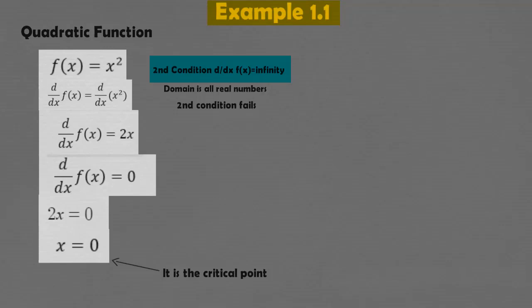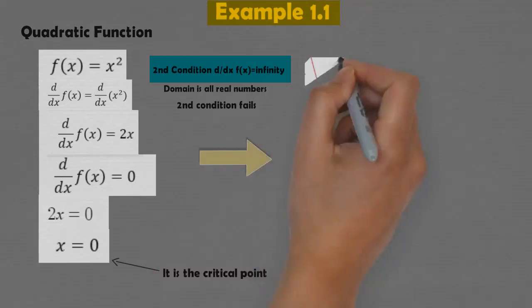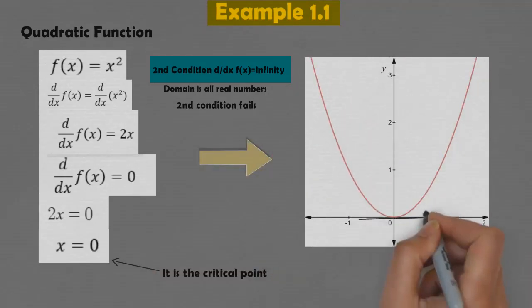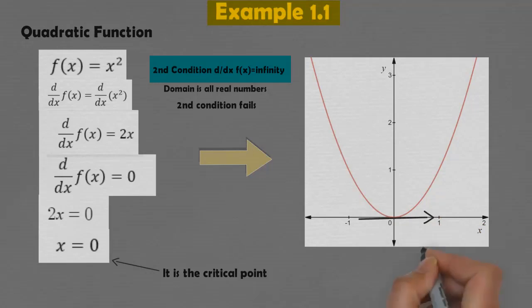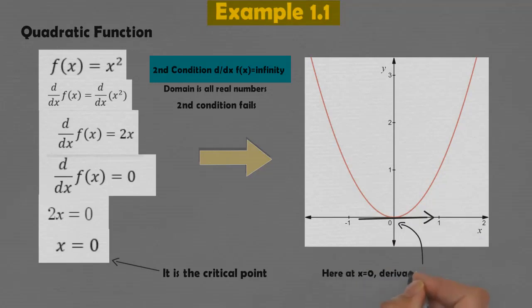That's how you find a critical point for a function. Visualizing its graph, which is a parabola, the derivative is zero at x = 0 as found, which means the slope of the tangent line at x = 0 is zero. Therefore x = 0 is a critical point.